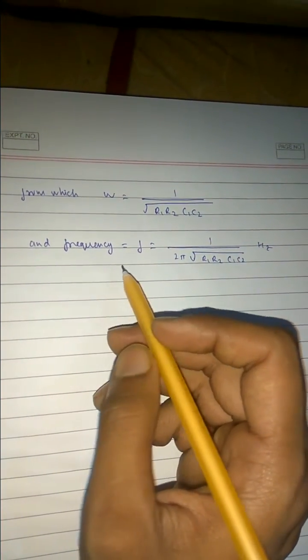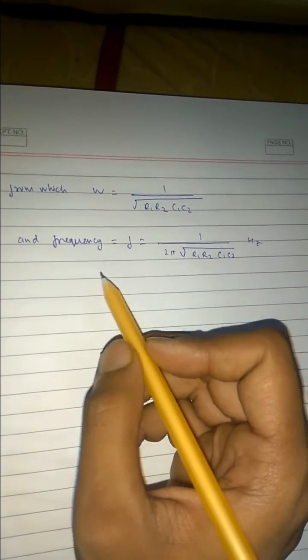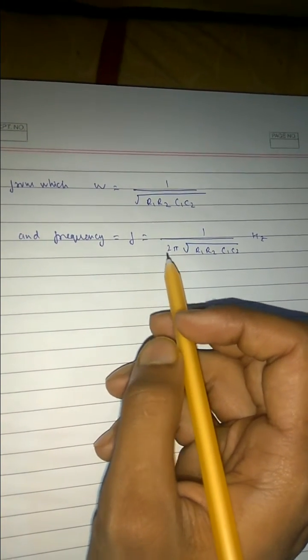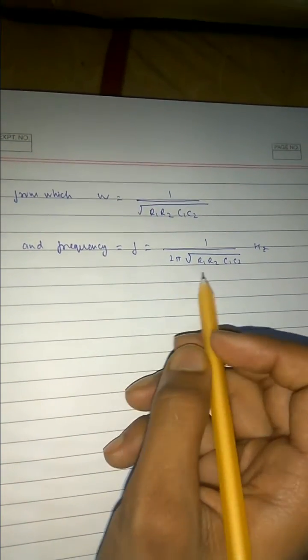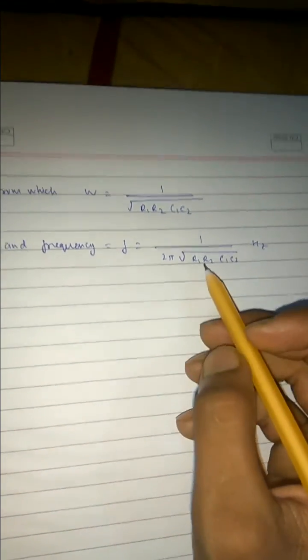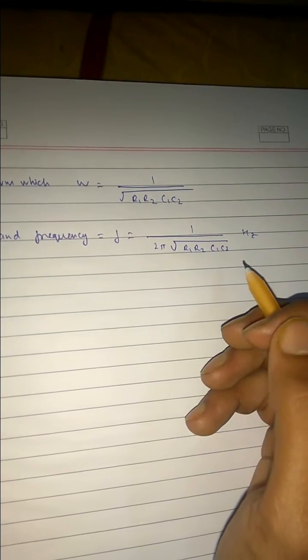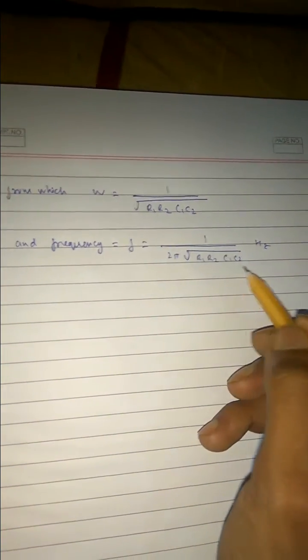And thus, omega is nothing but... omega is equal to 2πf, right? f equals 1 by 2π into omega. f equals to 1 by 2π omega. So this is our frequency expression.